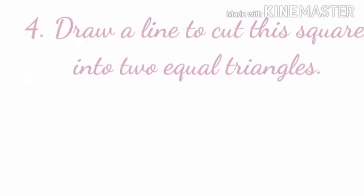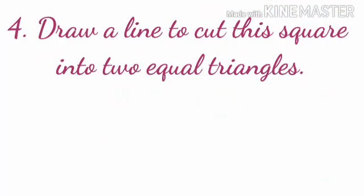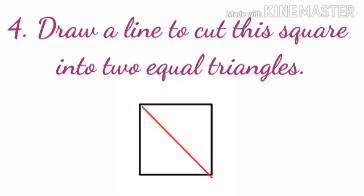Number 4. Draw a line to cut the square into two equal triangles. What we will do? Yes, like this we will draw one line and make it into two triangles.